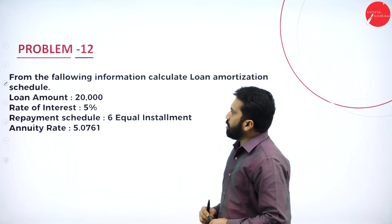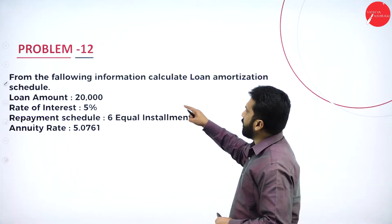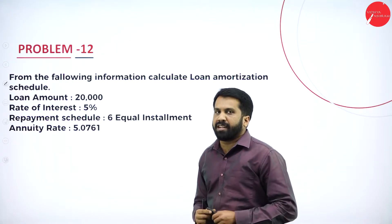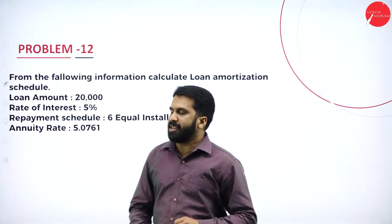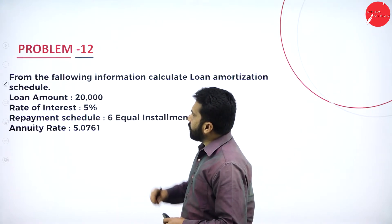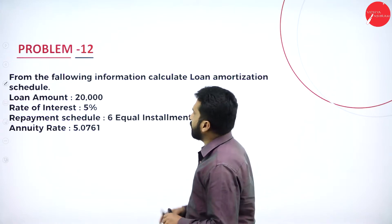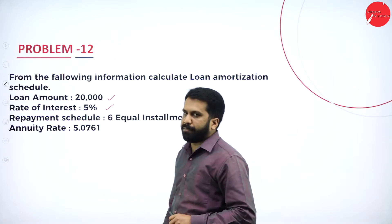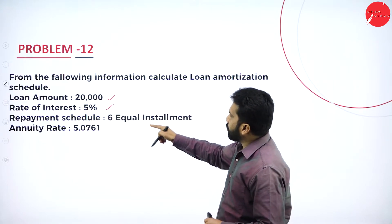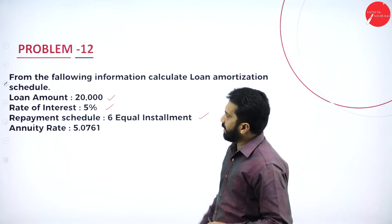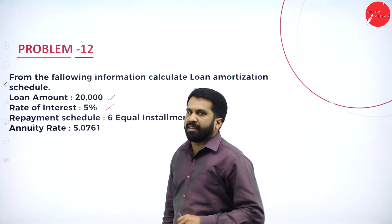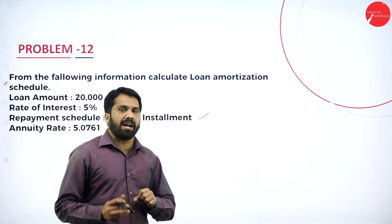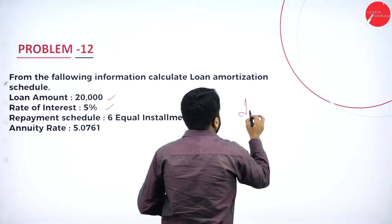The first part we will call it as concept along with concept problems on loan amortization. This will be your problem: from the following information, calculate the loan amortization schedule. The loan amount is 20,000, rate of interest is 5%, repayment schedule is 6 equal installments, and the annuity rate is given.